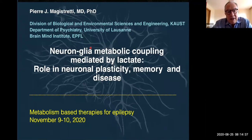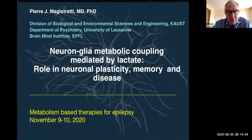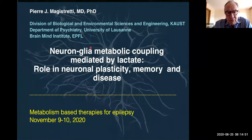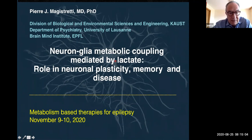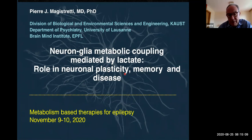I would like first to thank the organizers for inviting me to this workshop and in particular for asking me to give a brief introductory context about some aspects of brain energy metabolism. The one I will be focusing on is the work I've been doing for many years, which is related to neuron-glia metabolic coupling, and in particular the role that lactate produced by astrocytes, a glial cell type, plays on different aspects of neuronal functions, plasticity, memory, excitability, and disease.